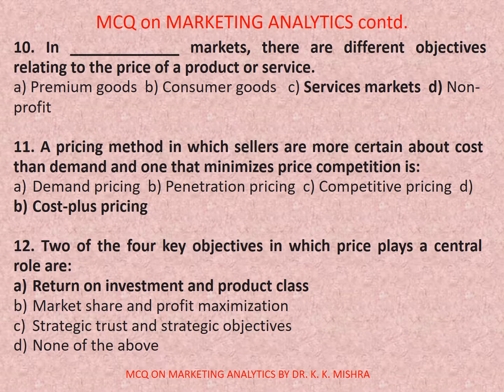Question number twelve: Two of the four key objectives in which price plays a central role are? Options are: a) return on investment and product class, b) market share and profit maximization, c) strategic trust and strategic objectives, d) none of the above. Correct option is a) return on investment and product class.